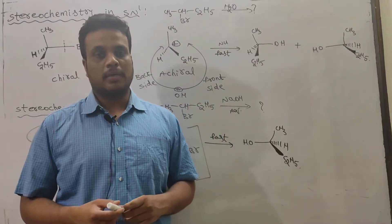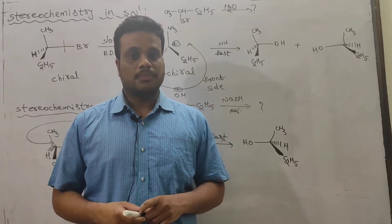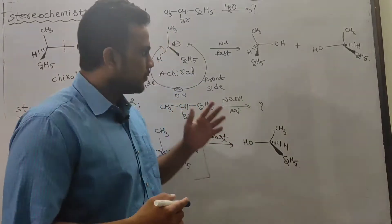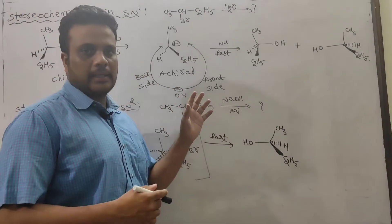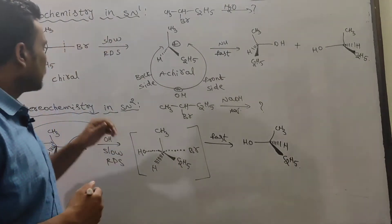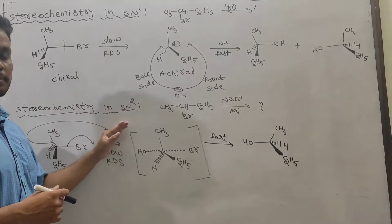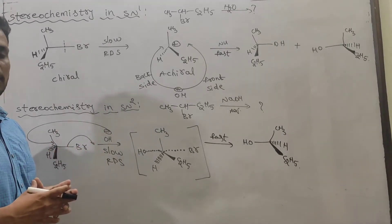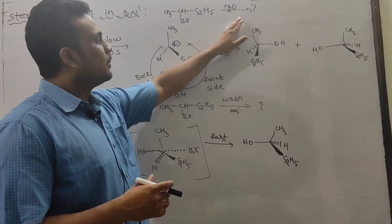I have just uploaded a video on SN1 and SN2 differences. Now it's time to discuss stereochemistry in SN1 and SN2 reactions. In SN1, the mechanism goes through a carbocation intermediate. I have taken a secondary haloalkane as an example for both SN1 and SN2 reactions, because secondary is the only haloalkane which undergoes both SN1 and SN2 mechanisms.